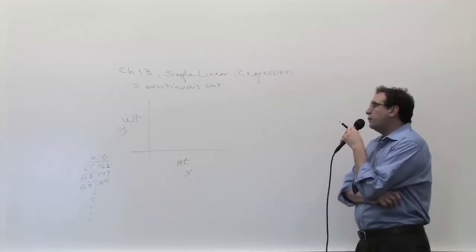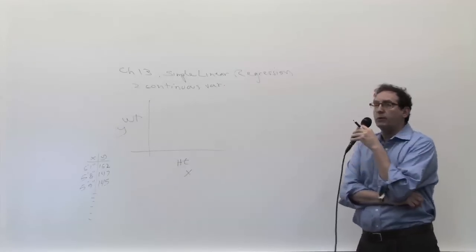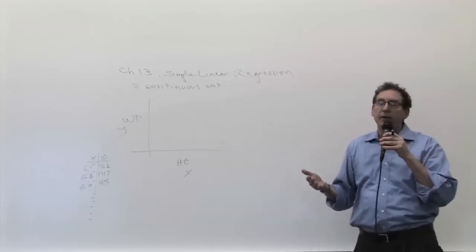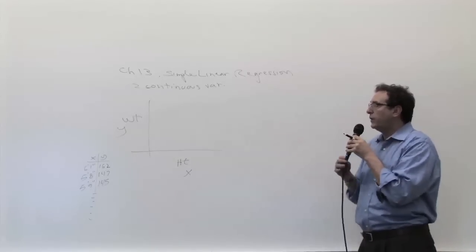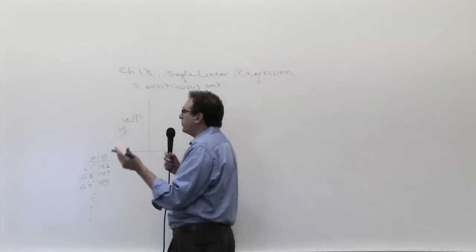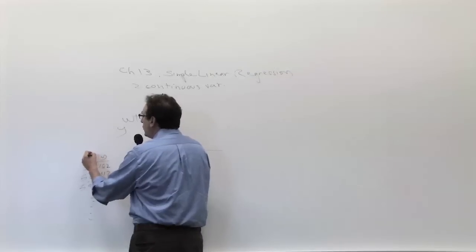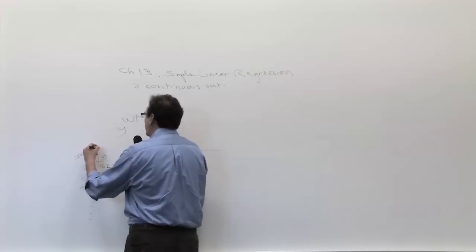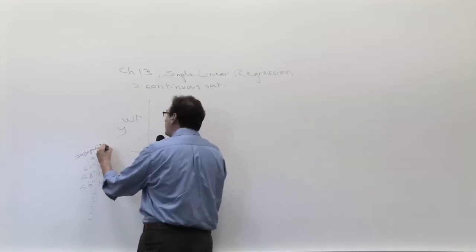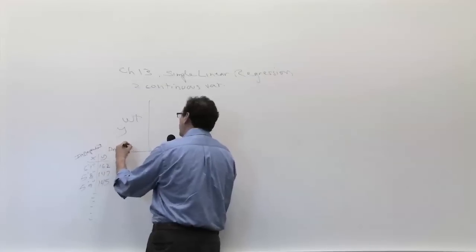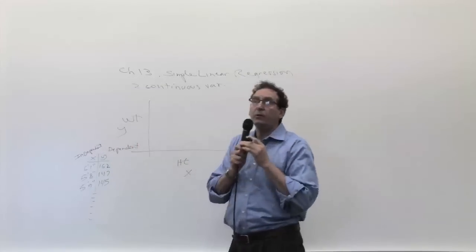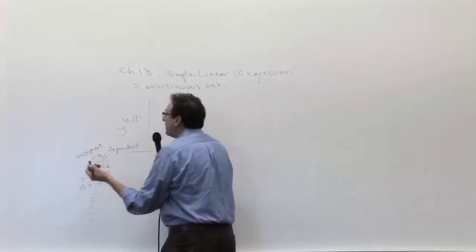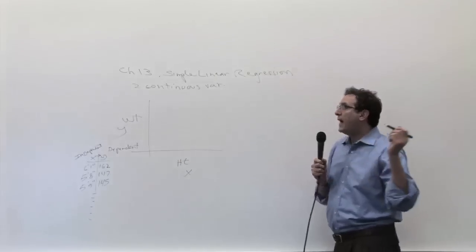The next question is what do you do with these numbers? The answer is you plot them, because if you can make a picture of something, it helps you visualize what you're trying to understand. Before getting into the picture, some terminology: the X variable is called the independent variable, and the Y variable is called the dependent variable.